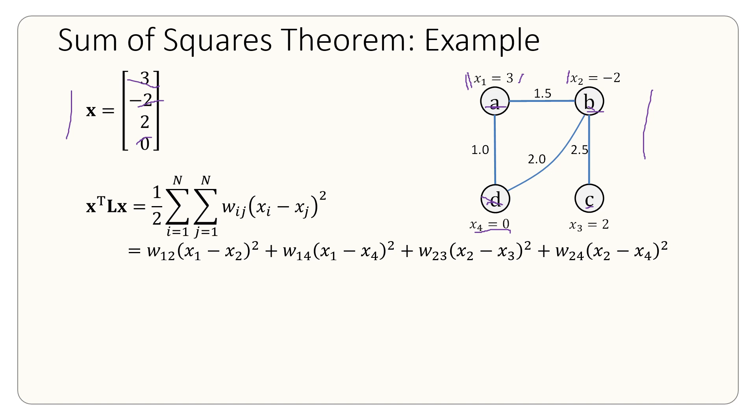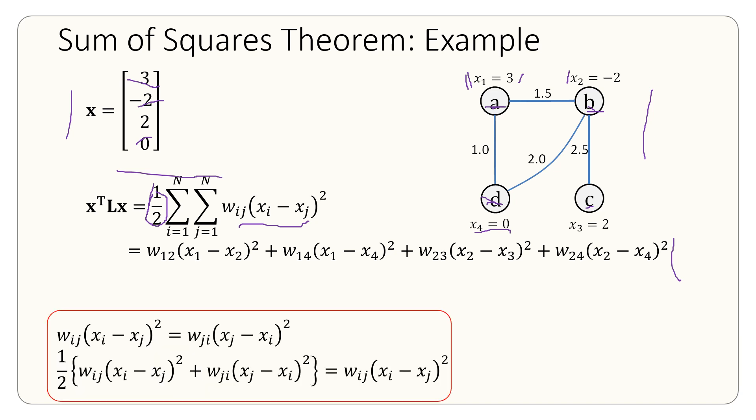So x transpose Lx is equal to half of this double summation wij times xi minus xj squared, which in our case is equal to this. Now here you will see that the half has disappeared. That's because wij is equal to wji, and so we can lump two identical terms together to get a single term. That's why instead of eight terms, I have four terms here.